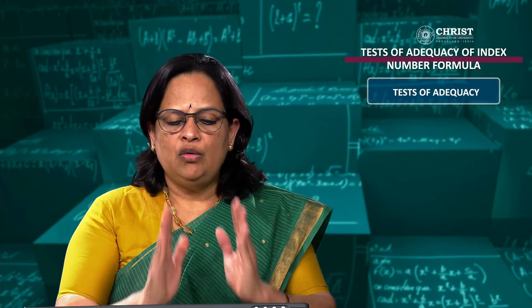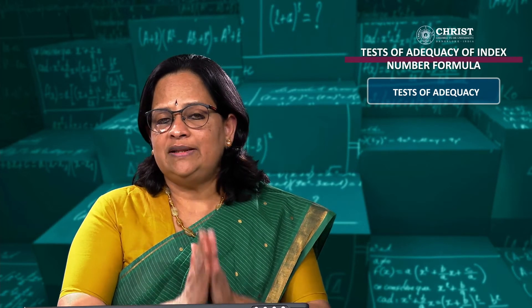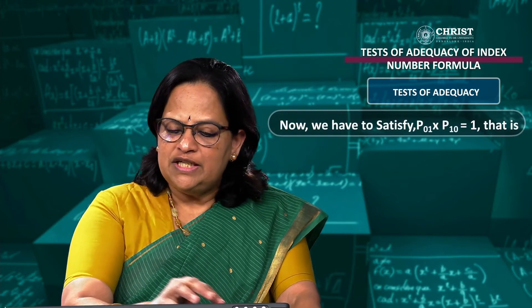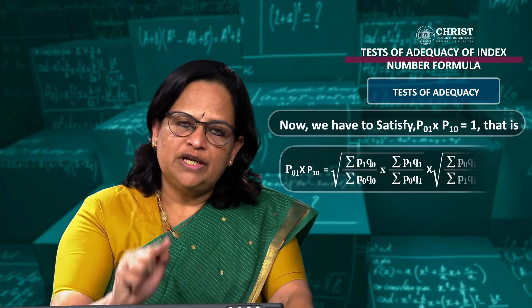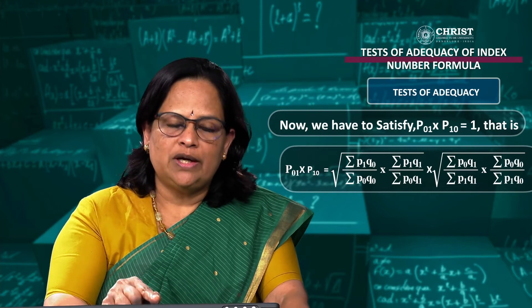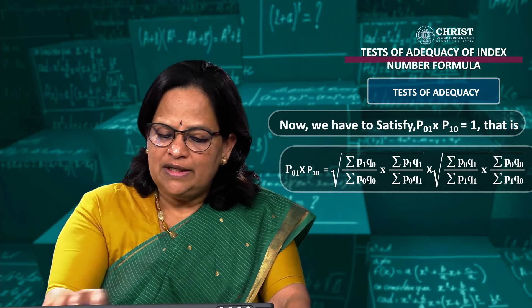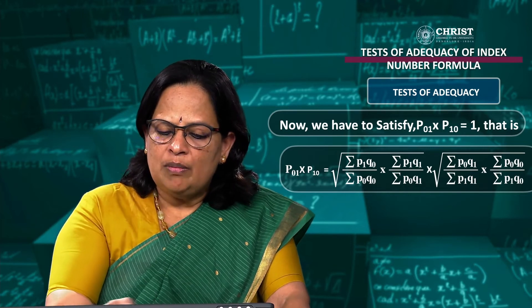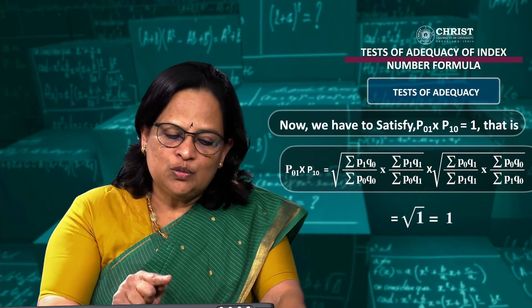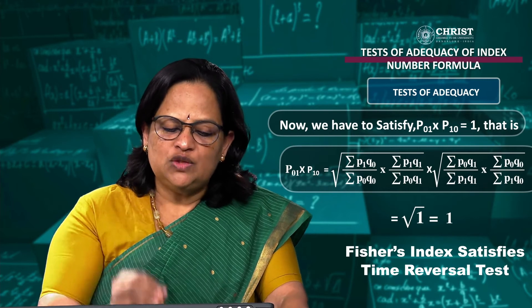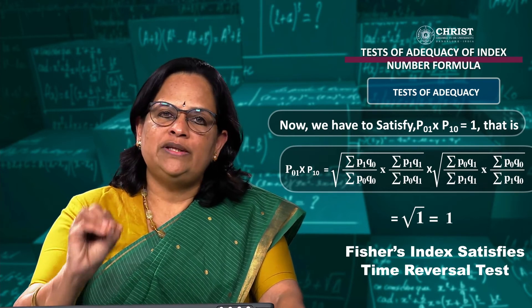We now check whether Fisher's ideal index satisfies this test. Writing both equations — P01 and P10 — and multiplying them together, the common values cancel out, and we get the square root of 1, which equals 1. This means P01 × P10 = 1, and therefore Fisher's ideal index is satisfying the time reversal test.